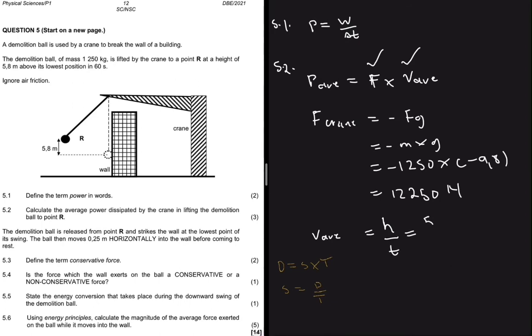So we're going to have height and then the time is the time, it's the 60 seconds we have there. So this will give us 5.8 meters divided by 60 seconds.